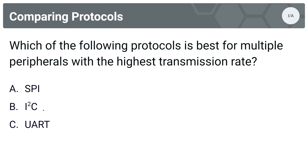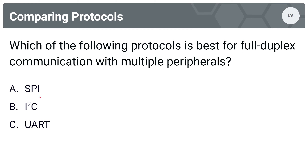Next question: which of the following protocols is best for multiple peripherals with the highest transmission rate? Options are SPI, I2C, or UART. The answer is A, SPI. SPI is a synchronous protocol which supports full duplex communication, conquering I2C in terms of speed because I2C is limited to half-duplex transmissions. Which of the following protocols is best for full duplex communication with multiple peripherals? The answer is again A, SPI — the only multi-peripheral full duplex option.